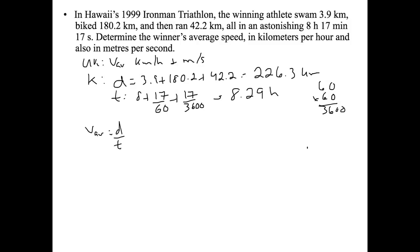Average velocity equals distance over time, which is 226.3 kilometers over 8.29 hours, and we get 27.3 kilometers per hour.